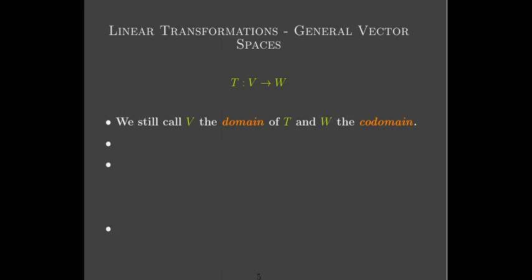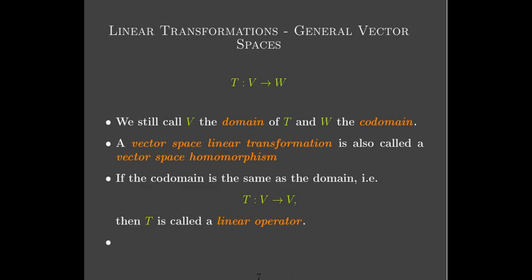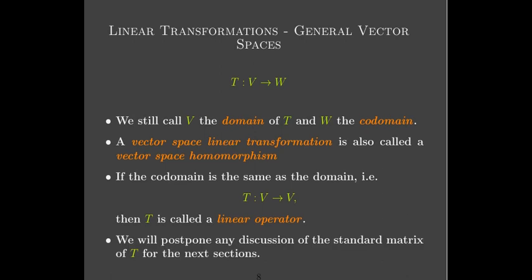The input space is still called the domain, and every vector in the domain gets mapped to something. The output space is called the codomain — maybe, maybe not, everything in the codomain is mapped. A vector space linear transformation is also called a vector space homomorphism. If you have the same vector space for the domain and the codomain, then we still call it a linear operator. And for finite-dimensional vector spaces, we can still find a standard matrix for the linear transformation, but we will look at that in the next few sections.